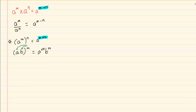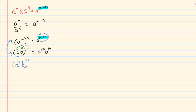These two rules usually work hand in hand. When you have a power outside, it must go to every piece inside. Also, if the inside term already has a power, the relationship must multiply. So if you have (a² · b) to the power of 3, the 3 goes to a² and to b, giving a to the power of 2 times 3, and b to the power of 3 — that is a to the power of 6, b to the power of 3.